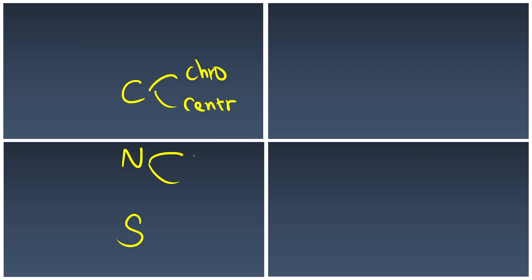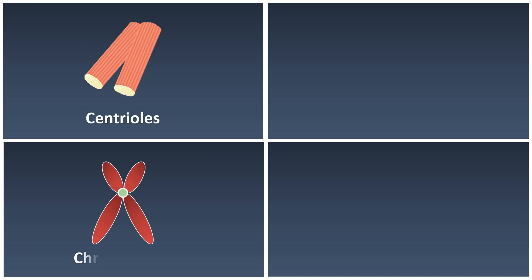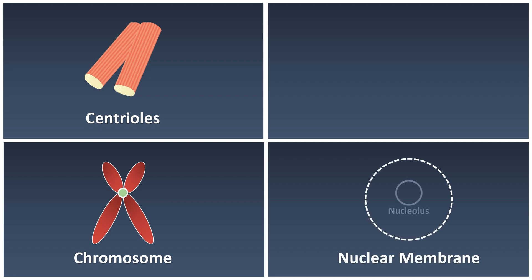To remember all of this, think of the acronym CNS. C stands for chromosome and centriole. N is for nuclear membrane and nucleolus. And S is for spindle fiber. You can remember it as CNS — like central nervous system, or chicken nugget sandwich. So again: C is centriole or chromosome, N is nuclear membrane and nucleolus, and S is for spindle fiber.